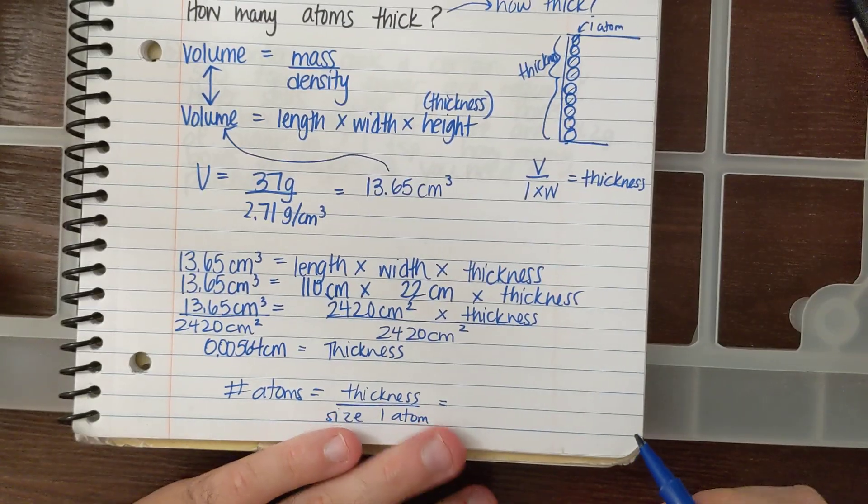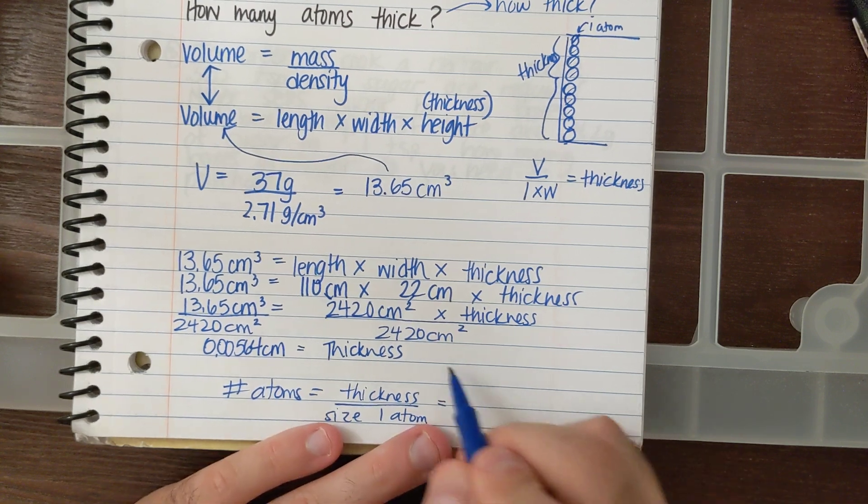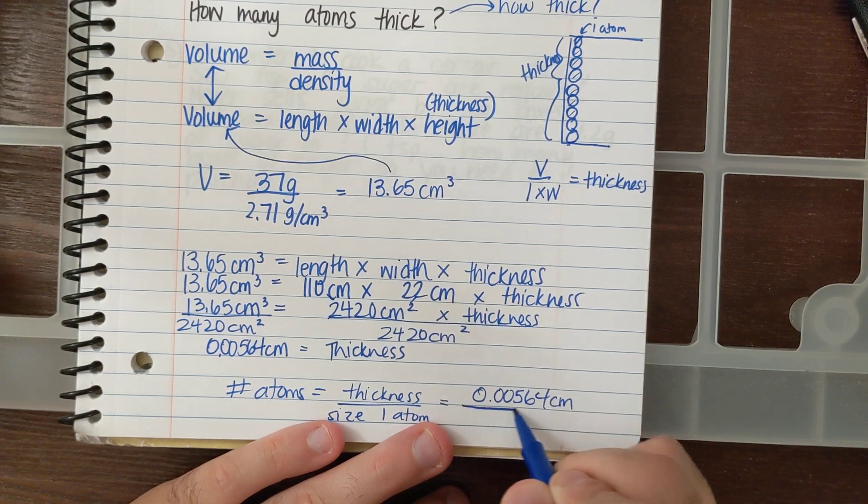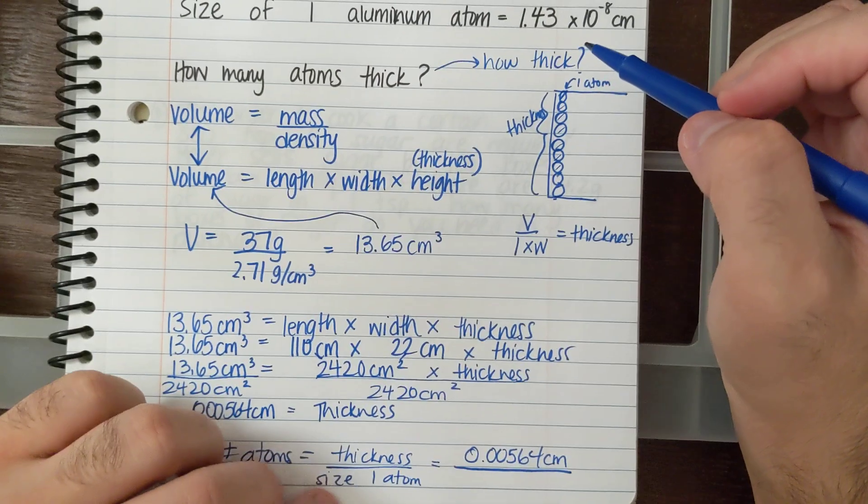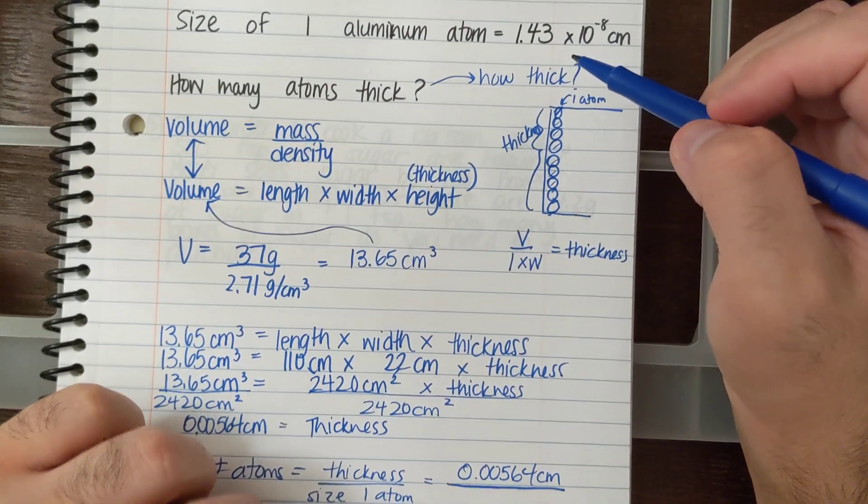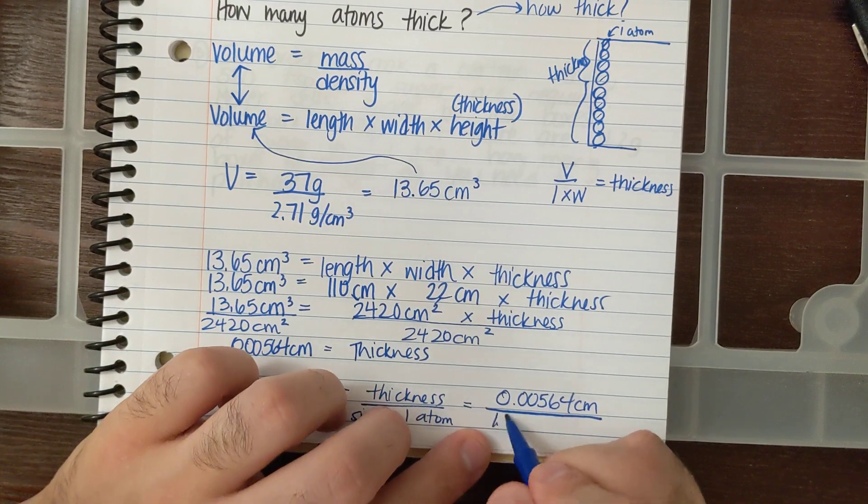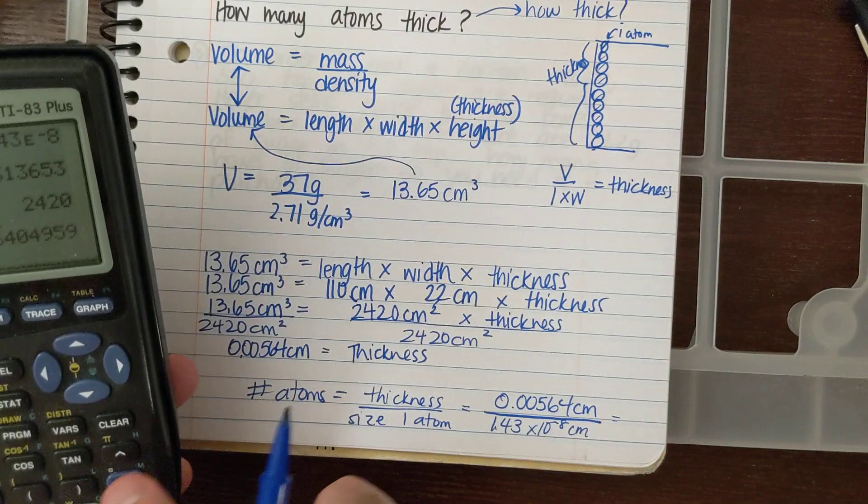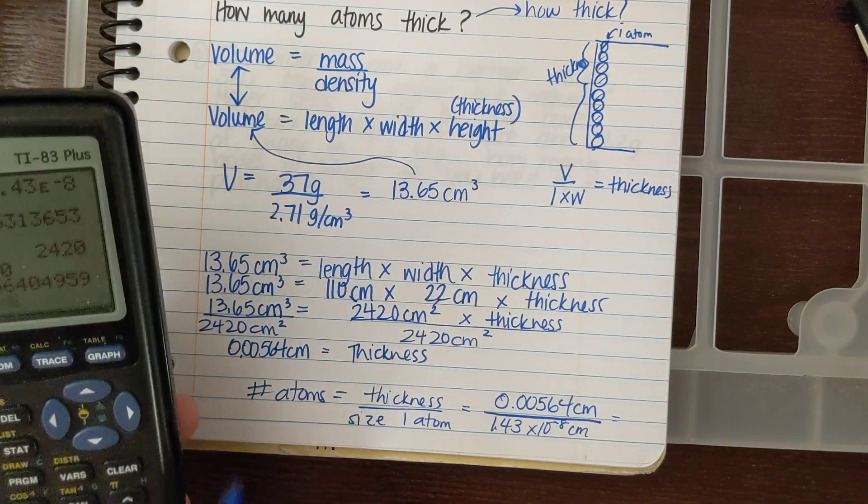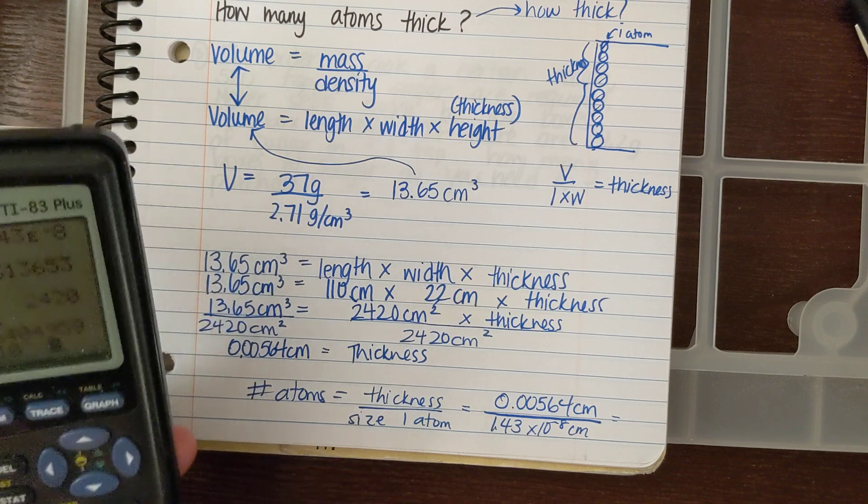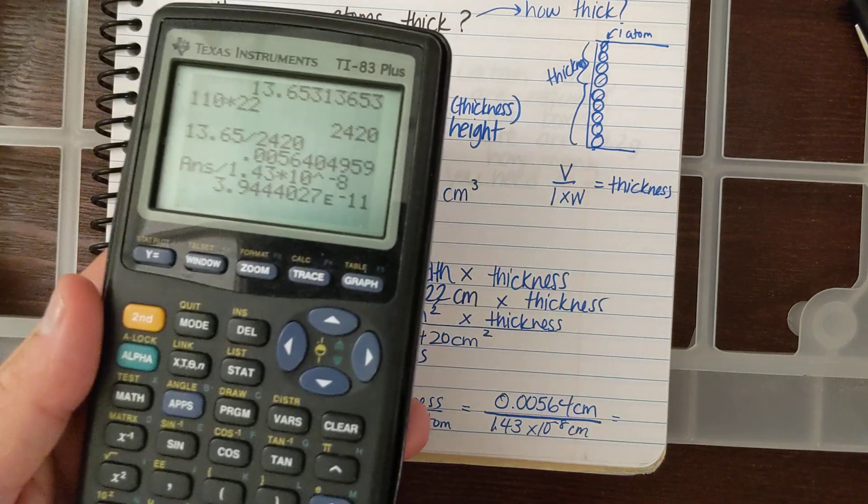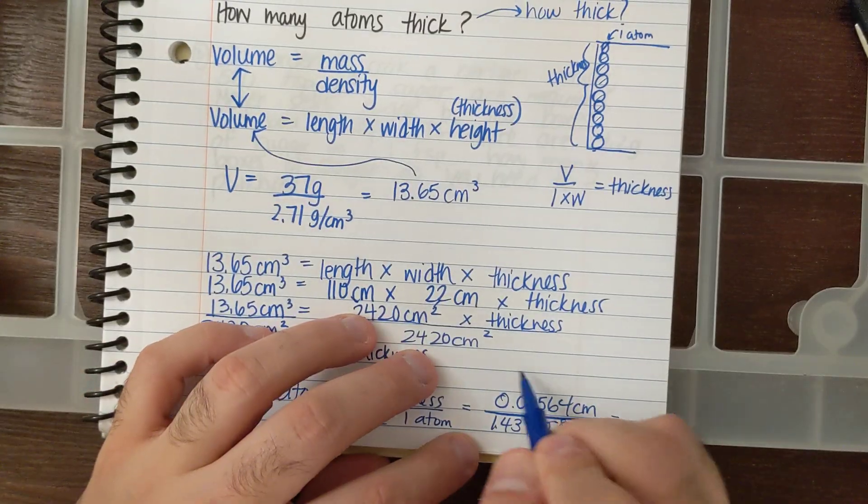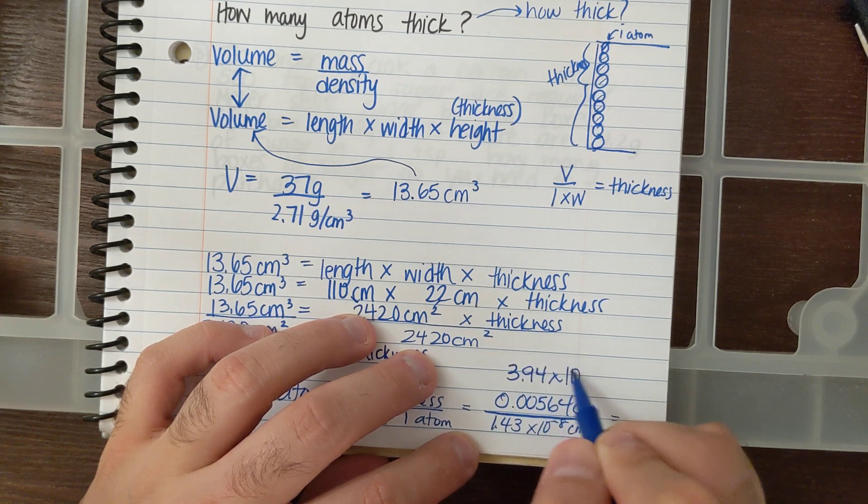So in doing that, number of atoms is going to be equal to my thickness, which is 0.00564 centimeters, divided by the size of one atom, which was 1.43 times 10 to the minus eighth centimeters. If I divide those two numbers, 0.00564 divided by 1.43 times 10 raised to the minus eighth, I'm going to get a lot of freaking atoms. 3.94 times 10 to the minus 11th.